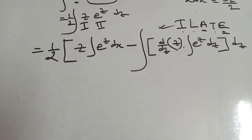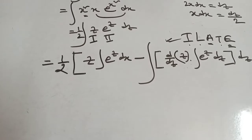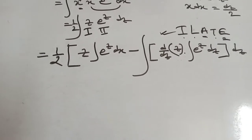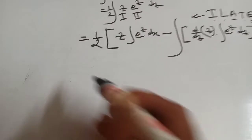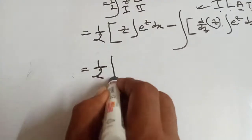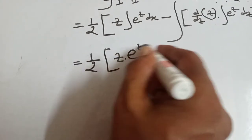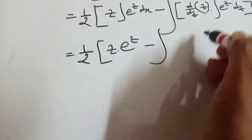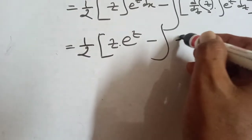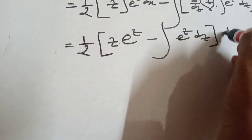Applying the formula: d/dz of z means 1, and integration of e to the power z means e to the power z dz, bracket complete dz.